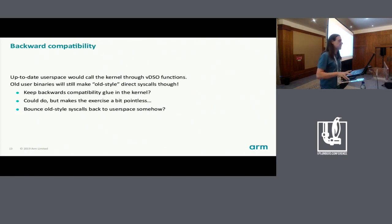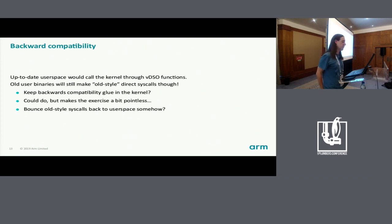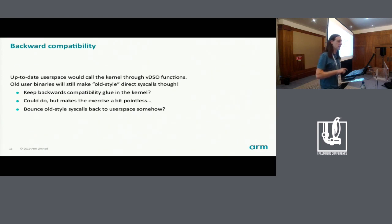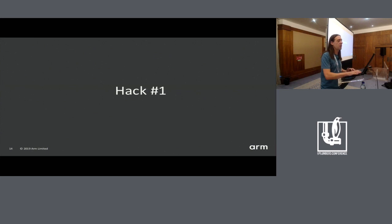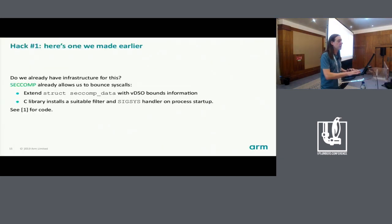You rightly make the point about backwards compatibility. We can update user space software to call some library, but all the existing binaries are still going to make direct syscalls and we have to make that work somehow. We could keep all the backwards compatibility glue in the kernel, but if part of the object of the exercise was to move that stuff out of the kernel, then it makes the exercise a bit pointless. So I wondered if there was some feasible way to bounce old-style system calls back out into user space and have user space handle that somehow.